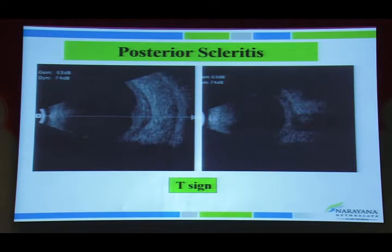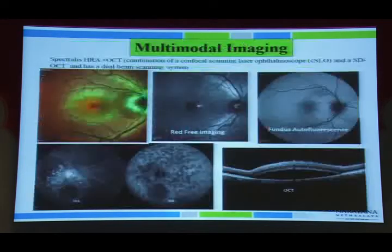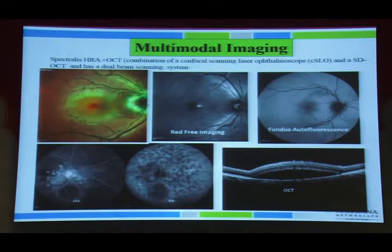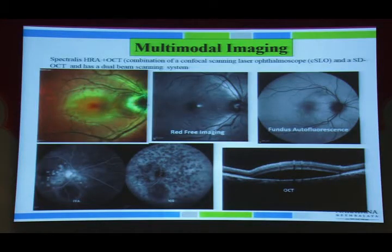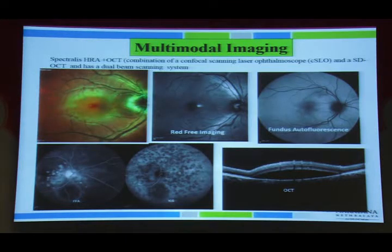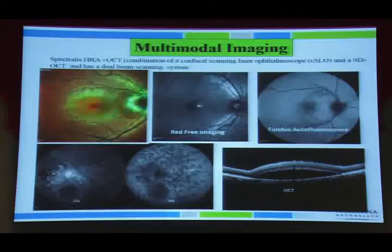Multimodal imaging has revolutionized understanding of pathology. Color fundus photography documents changes; red-free photography shows nerve fiber layer defects; fundus autofluorescence studies RPE and chorioretinal complex pathologies; fundus fluorescein angiography studies retina and retinal vasculature; indocyanine green angiography studies choroidal pathologies. With latest technological advances, dual FFA and ICG can be performed together.